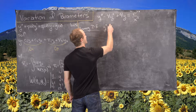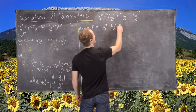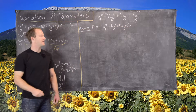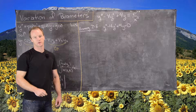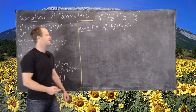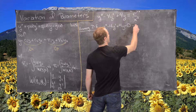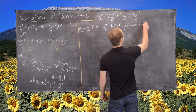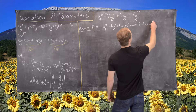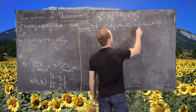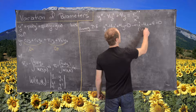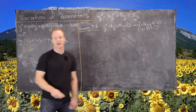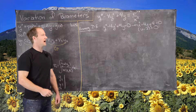The homogeneous differential equation is y double prime minus 4y prime plus 4y equals 0. By the theory of homogeneous second-order linear differential equations with constant coefficients, we look at the corresponding characteristic polynomial: u squared minus 4u plus 4 equals 0, and find its roots.